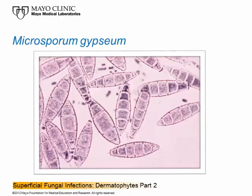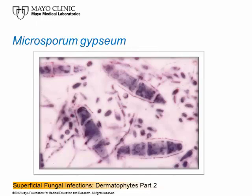The slide shows Microsporum gypseum macroconidia, and you can see the rough wall if you look closely. At the end of the macroconidium in the center bottom of the slide, on the left-hand side you can see where it was attached to a hyphal strand, and looking at the opposite end you see that it's rounded — a characteristic of Microsporum gypseum. Often the center cell grows a little faster than the others and appears larger. The macroconidia are multi-celled, rough-walled, and rounded on the end.